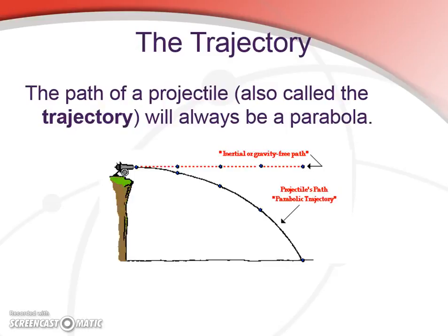And we can see up top the direction of the projectile where there's no gravity acting on it. And then, the parabola below where the projectile moves downward due to acceleration due to gravity.